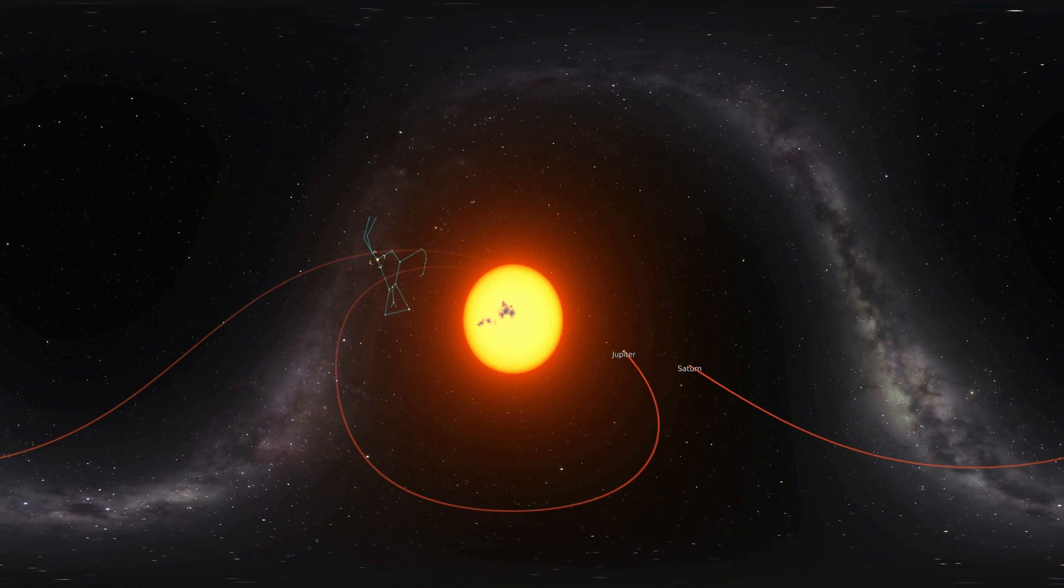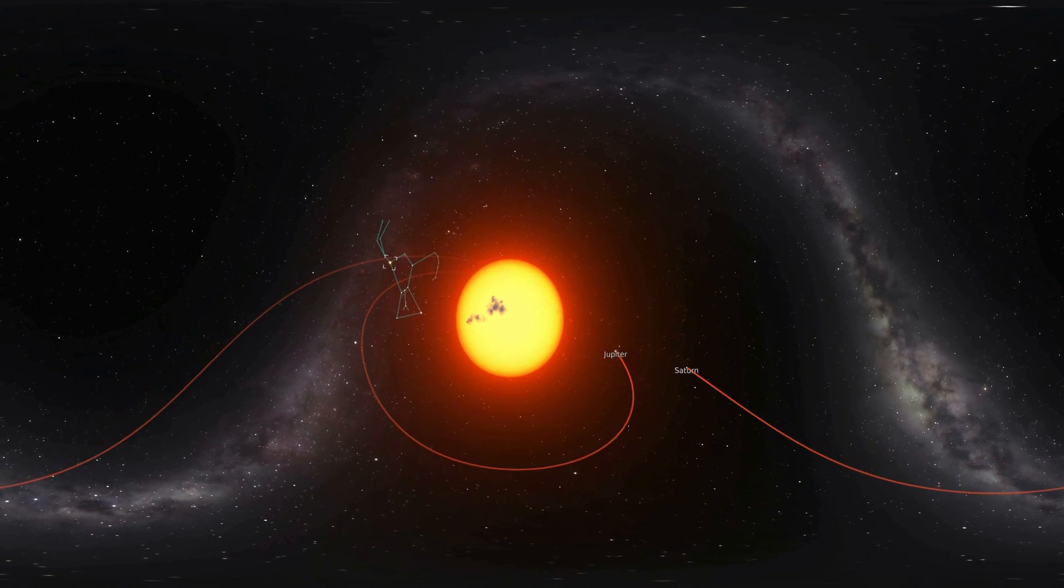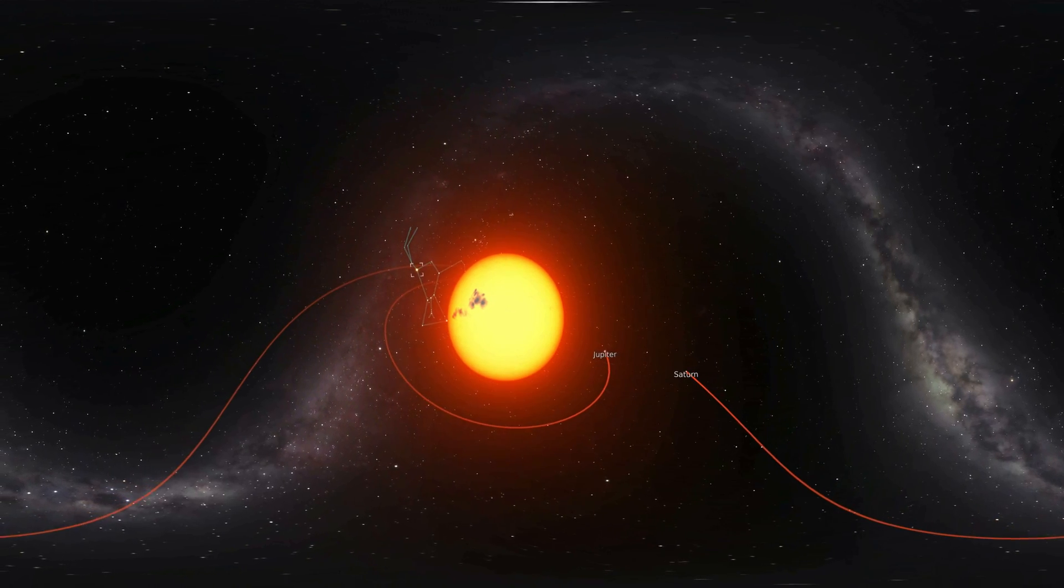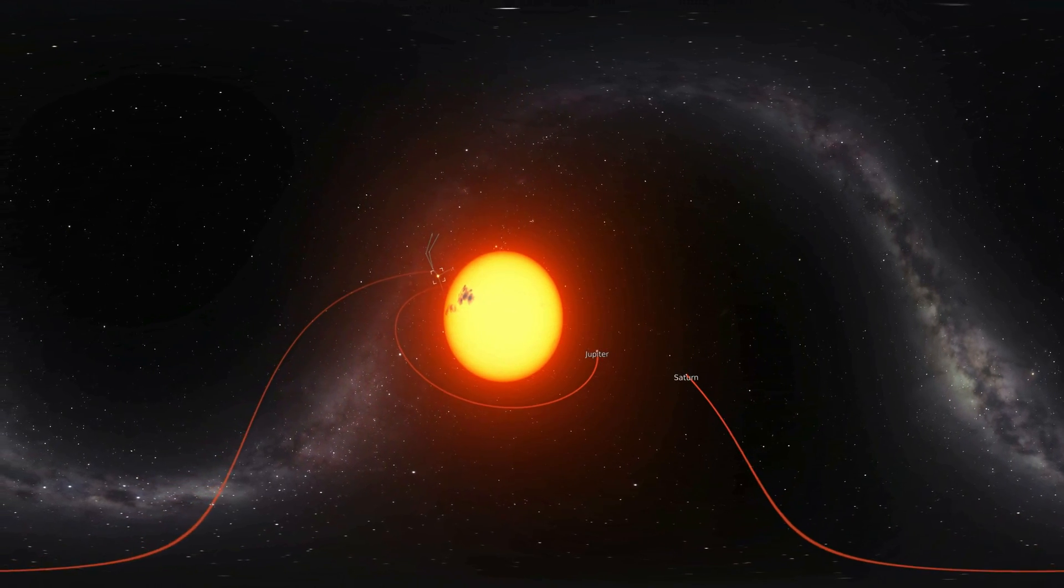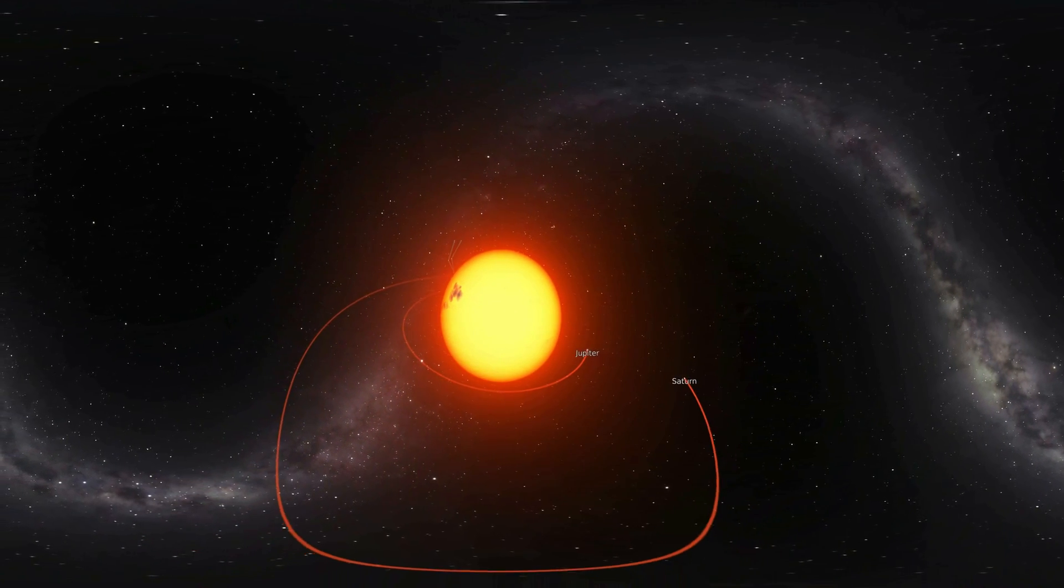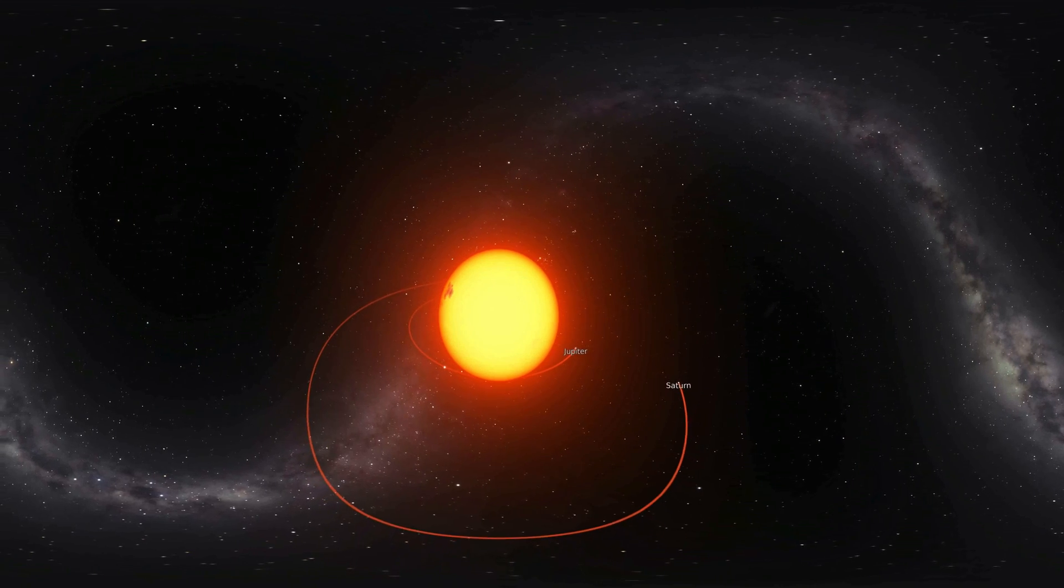Because it is a red supergiant, Betelgeuse may one day go supernova. These events are the most energetic explosions humans have ever seen. But don't worry, it is far enough away that it will not present a hazard to Earth.